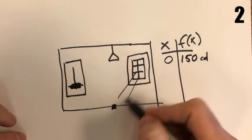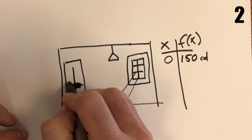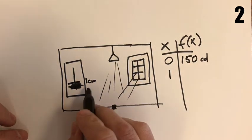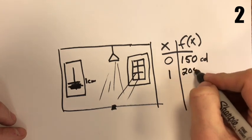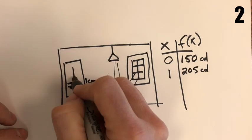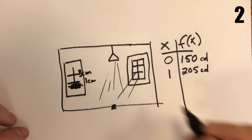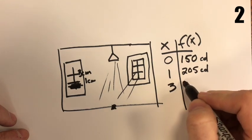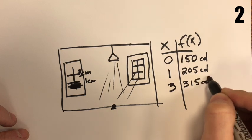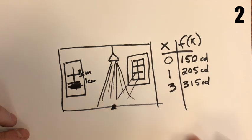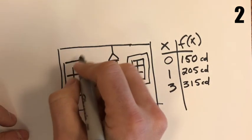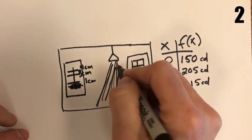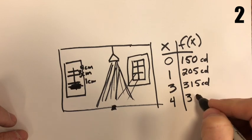If we move the dimmer up one centimeter, we've got a little bit of light coming out, and now we're at 205 candelas. At three centimeters we're at 315 candelas — a lot more light coming out. At four centimeters we've got even more light: 370 candelas.